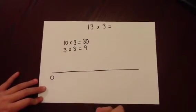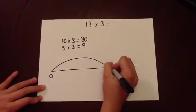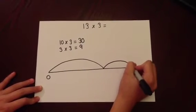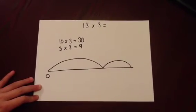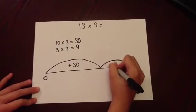We're going to do two large jumps: one large jump of 30 and one smaller jump of 9. Inside the large jump, we're going to write 'add on 30,' and in the next one, 'add on 9.'